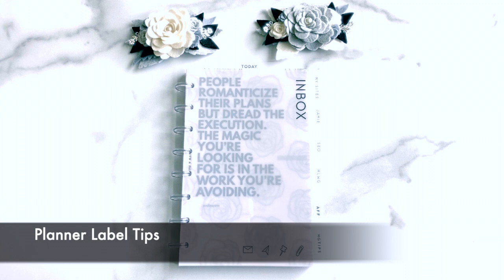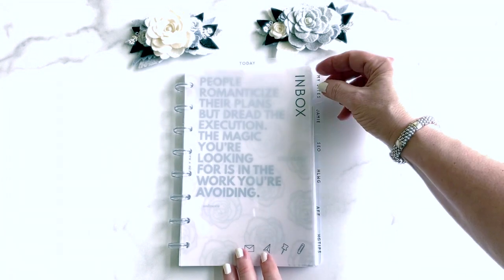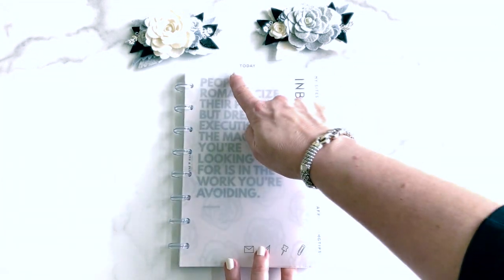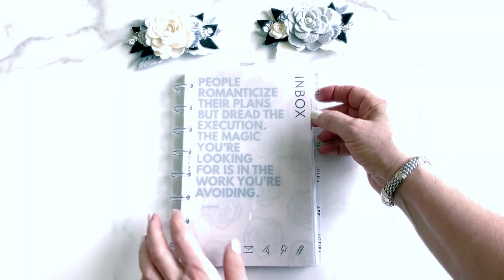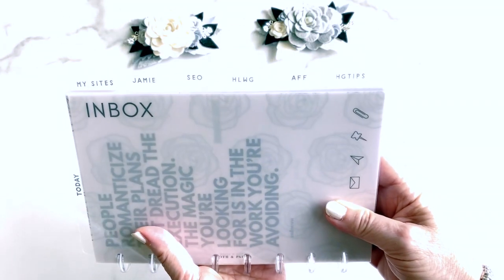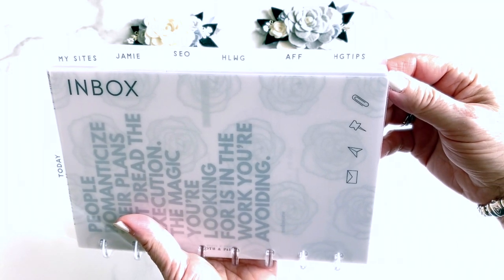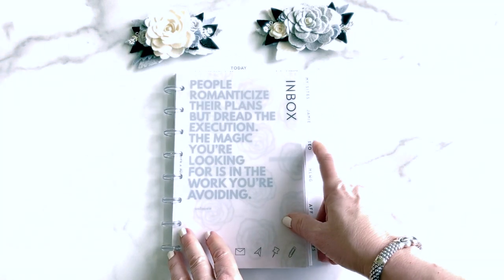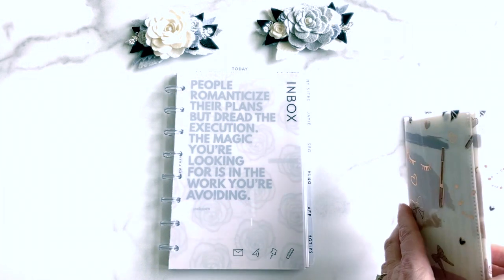I have covered this before but let me show you again. You can notice that if you look at the today dashboard and then you look at my labels, which are on the clear glass dividers, it looks very similar. What I do is I get custom stickers made from Scribble Sticker Co.